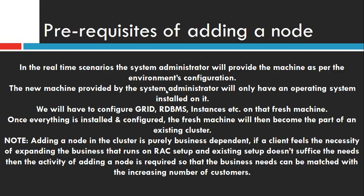The new machine provided by the system administrator will have nothing but the operating system installed. We will have to configure grid, RDBMS, instances, etc. on that fresh machine. The new machine will not be connected to the existing cluster setup, so we need to install grid, install RDBMS, and add the instance — or multiple instances if required. Once everything is installed and configured, the fresh machine will then become part of the existing cluster.